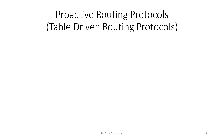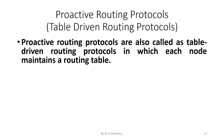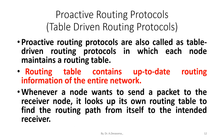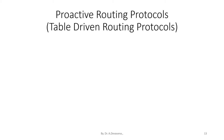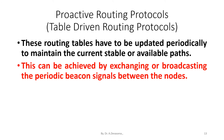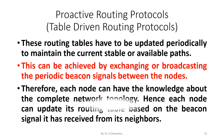Proactive routing protocols are also called table-driven routing protocols, in which each node maintains a routing table. The routing table contains up-to-date routing information of the entire network. Whenever a node wants to send a packet to the receiver node, it looks up its own routing table to find the routing path from itself to the intended receiver. Each node can thus have knowledge of the complete network topology.